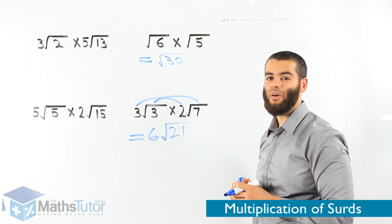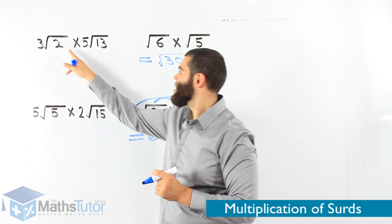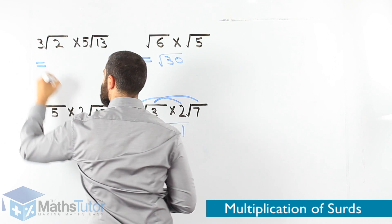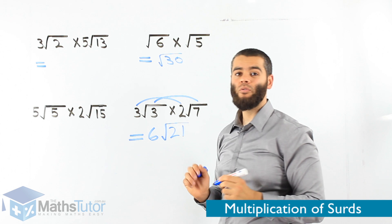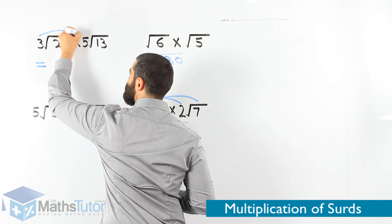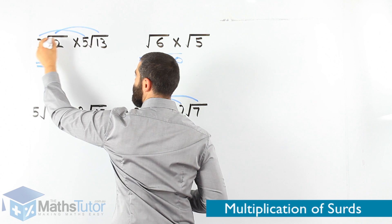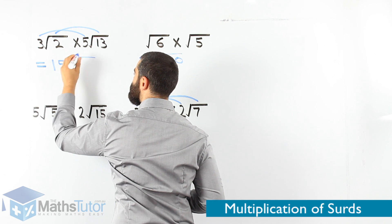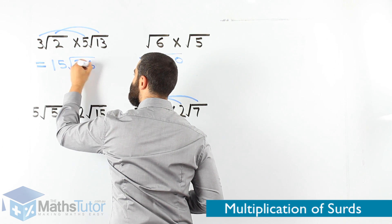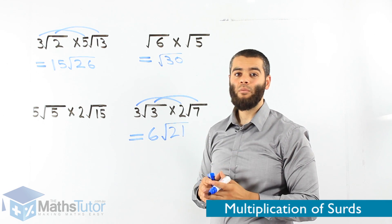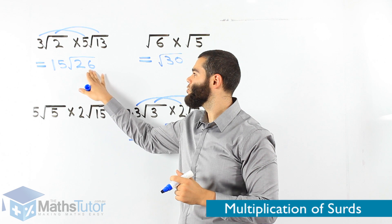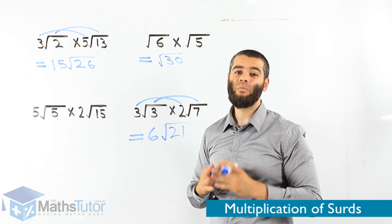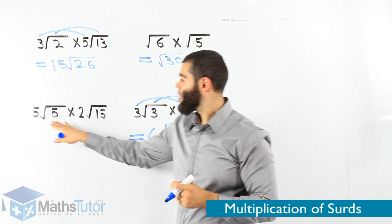The next one: 3 root 2 times 5 root 13. We multiply the whole numbers together and the roots together. 3 times 5 is 15, root 2 times root 13 is root 26. So 15 root 26. Can we simplify? No, we can't — there are no two numbers that multiply to get 26 where one of them square roots. So 15 root 26 is our answer.